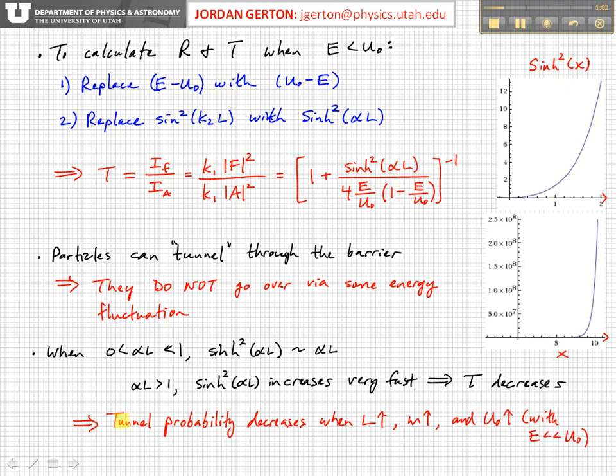So in particular, the tunnel probability decreases when... what affects the tunnel probability? What are the obvious things? Well, when the width of the barrier goes up, that means that the argument of the hyperbolic sine gets larger. And as we just said, it doesn't have to get very big for the sinh squared to get very large. And since it's inverted, that corresponds to the tunnel probability T going down significantly.